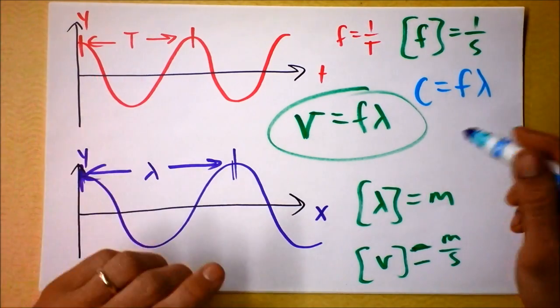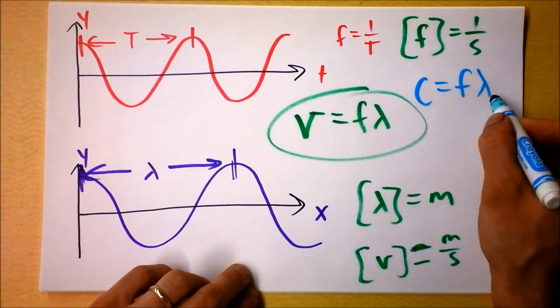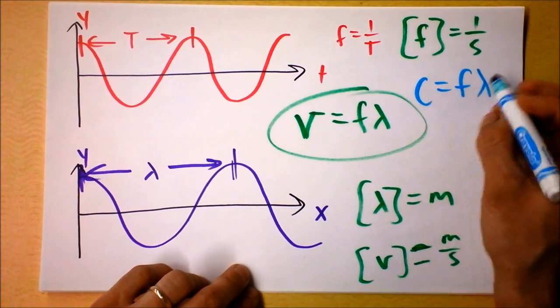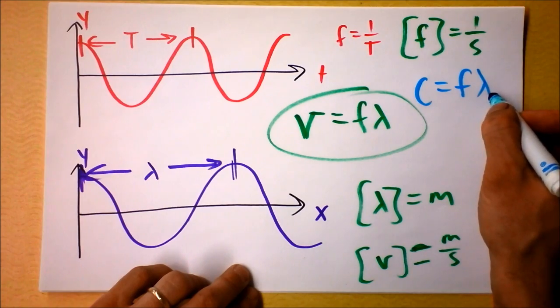And higher energy light means higher frequency, which in turn means lower wavelength, because the speed of light is a constant. If frequency goes up, then wavelength goes down.